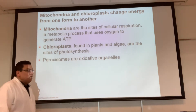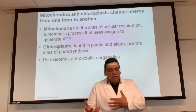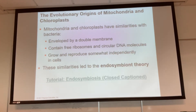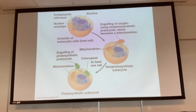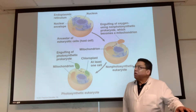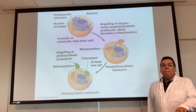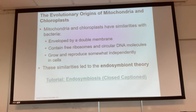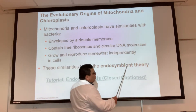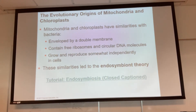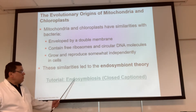The next thing is the mitochondria and the chloroplasts. The interesting thing about that is there is a theory that states that the mitochondria and the chloroplasts used to be bacteria. That theory is called endosymbiosis, or the endosymbiont theory — another word for that is endosymbiosis.